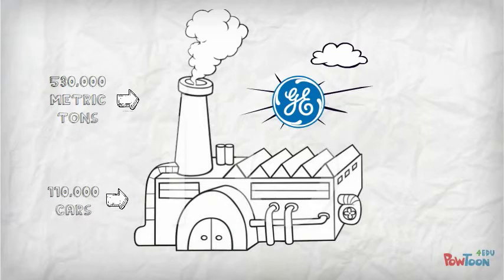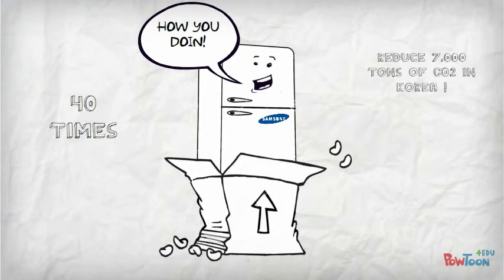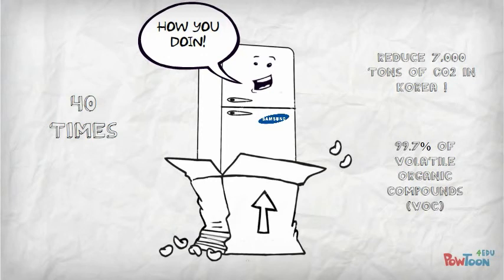Samsung designed a reusable packaging for refrigerators that can be used up to 40 times. The paper and polystyrene packaging is replaced with expanded polypropylene. It's estimated to reduce 7,000 tons of carbon dioxide in Korea and 99.7% of VOC. This durable packaging also prevents product damage during shipping and delivery.